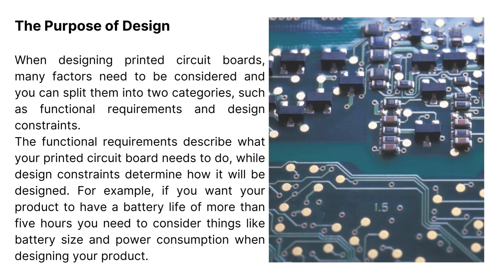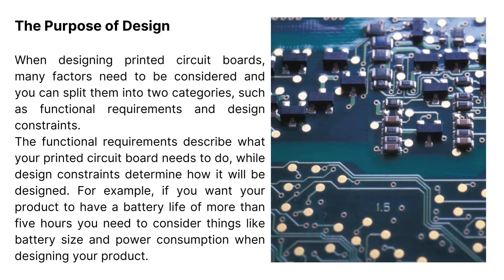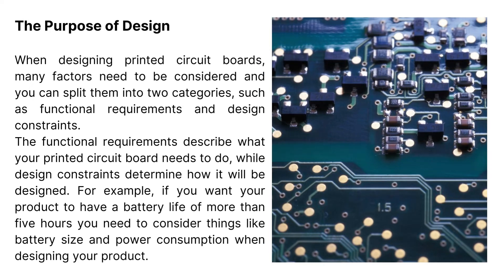When designing printed circuit boards, many factors need to be considered and you can split them into two categories: functional requirements and design constraints. The functional requirements describe what your printed circuit board needs to do, while design constraints determine how it will be designed. For example, if you want your product to have a battery life of more than five hours, you need to consider things like battery size and power consumption when designing your product.